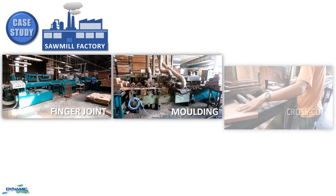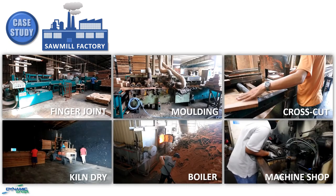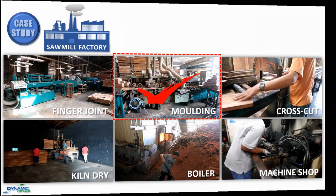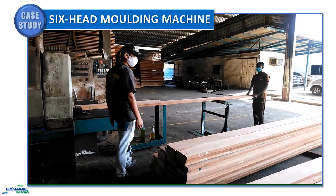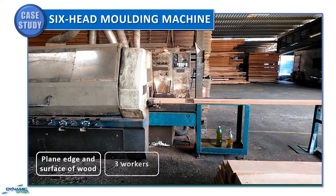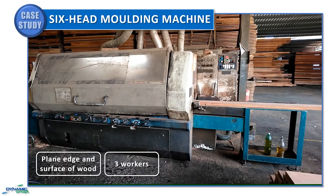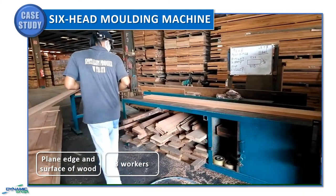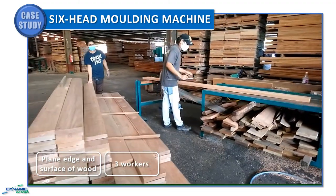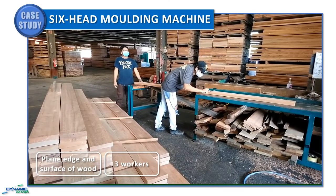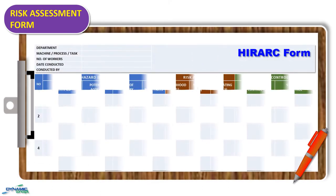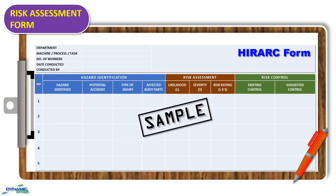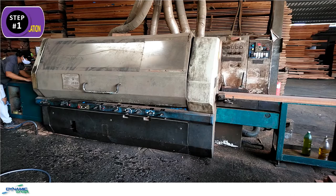For the assessment case study, I chose a sawmill factory. Basically, there are six main processes involved in this factory. Let's do an assessment for the molding machine. The six-head molding machine blends the edge and surface of the wood to a smooth finish. There are three workers at this machine: the first feeds rough wood in one end and finished molding comes out the other; the second measures wood thickness and makes machine adjustments; and the third arranges finished wood on a pallet for delivery to the next process. During the assessment, we will use this form to record the findings.